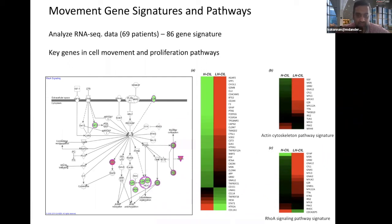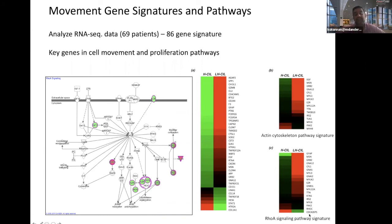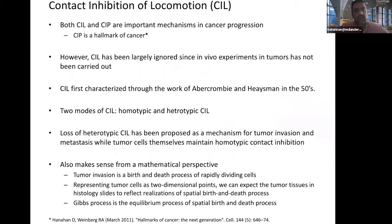I associated these clusters with gene signatures and pathways using RNA-seq data. There were key genes involved in cell movement and proliferation pathways — specifically the actin cytoskeleton pathway and the RhoA signaling pathway, which are extremely important pathways for locomotion.